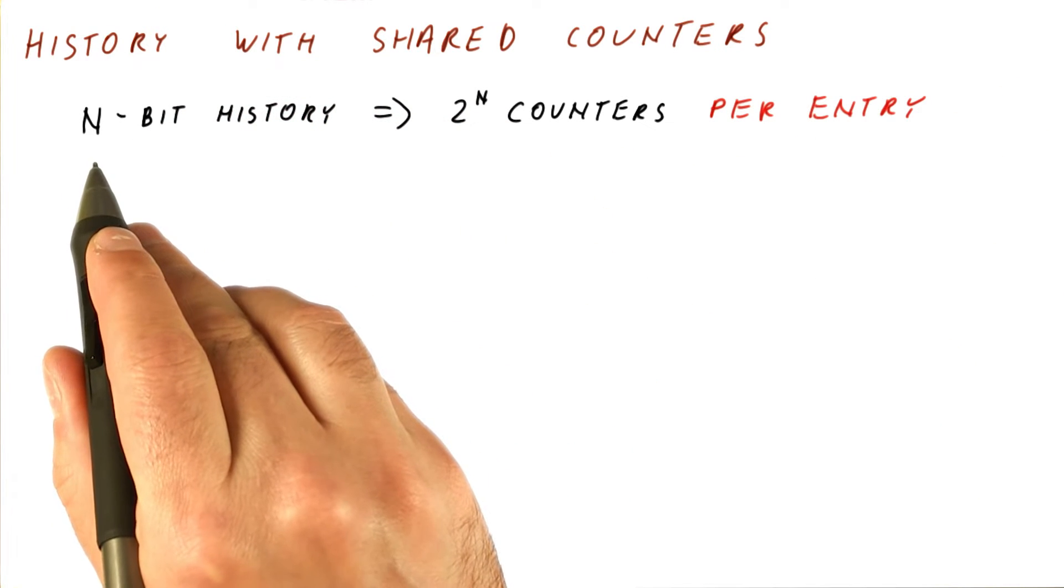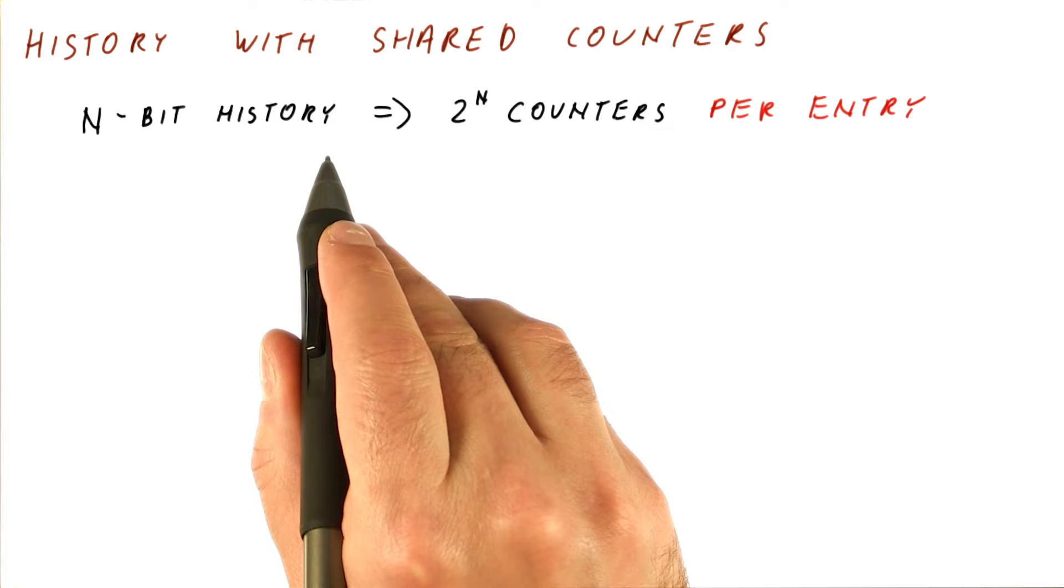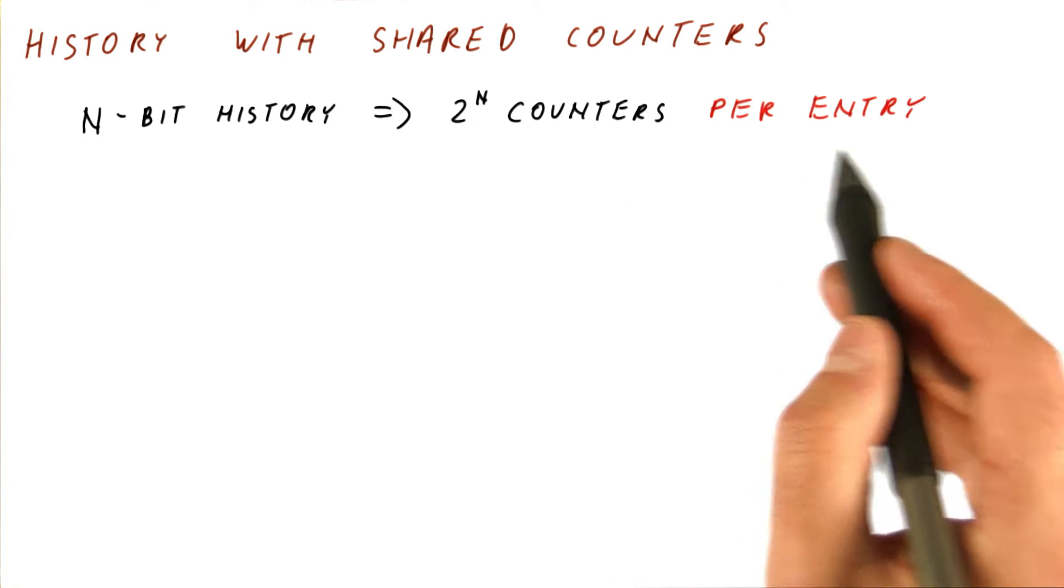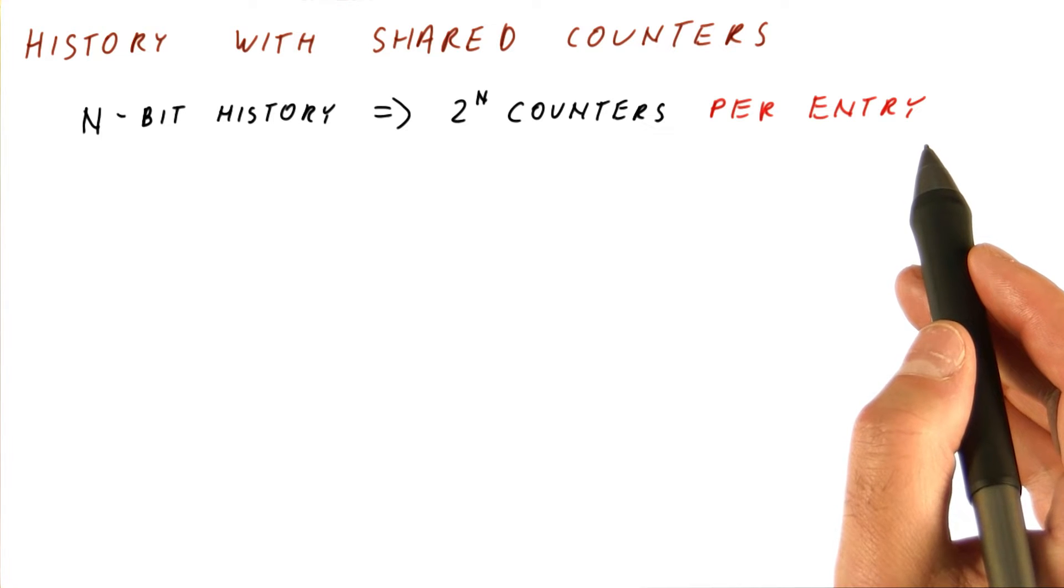So again, the motivation for this is that with n-bit history, the way we've just seen it, we will need 2^n counters per entry if we want to do things the way we've just done them.